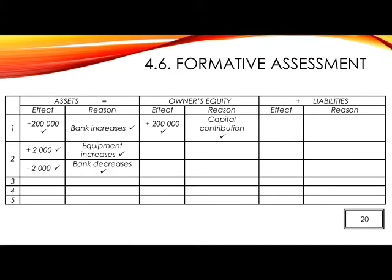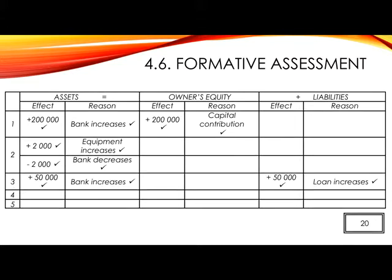Number 3. Took out a loan from Simplest Bank, 50,000 Rand. The two accounts involved are Bank, an asset, and Loan, a liability. Assets will increase by 50,000 — tick — because Bank increases — tick. Liabilities plus 50,000 — tick — because Loan increases — tick.